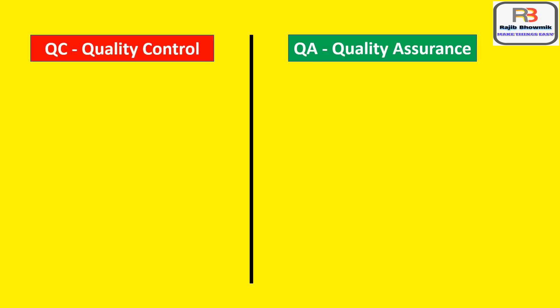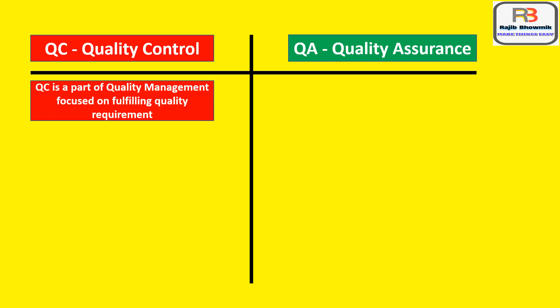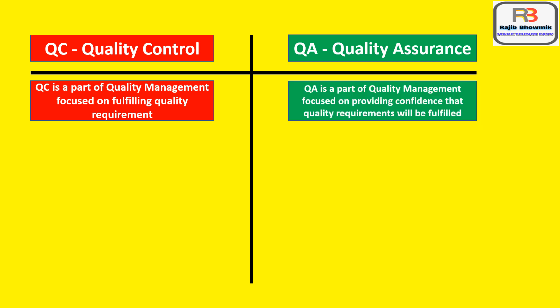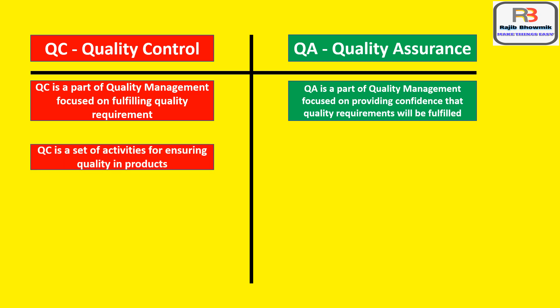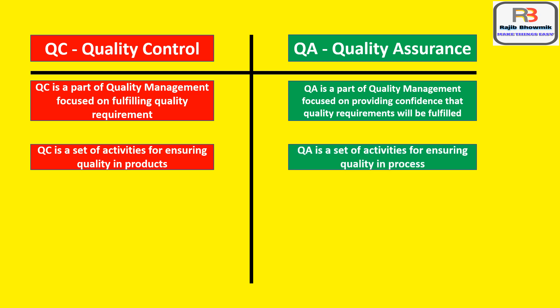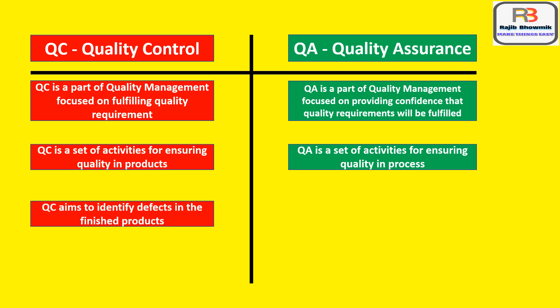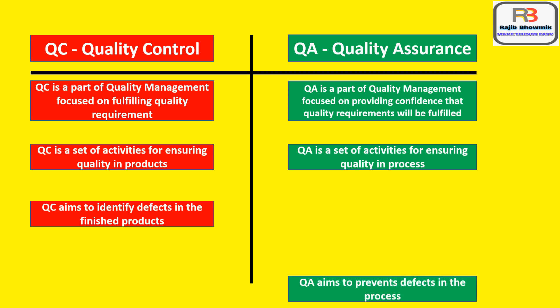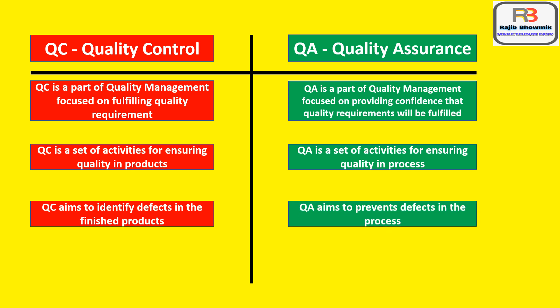Now I will tell you the formal differences between QC and QA. QC is a part of quality management focused on fulfilling quality requirements. QA is a part of quality management focused on providing confidence that quality requirements will be fulfilled. QC is a set of activities for ensuring quality in products, whereas QA is a set of activities for ensuring quality in the process. QC aims to identify defects in the finished products, while QA aims to prevent defects in the process.